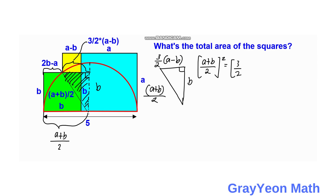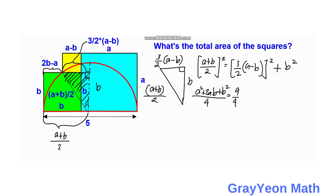Expanding: (a² + 2ab + b²)/4 equals (9/4)(a² minus 2ab + b²) plus b².